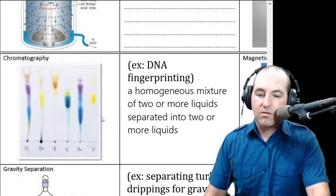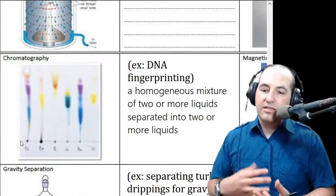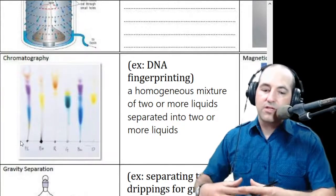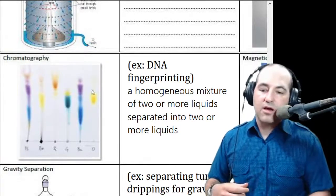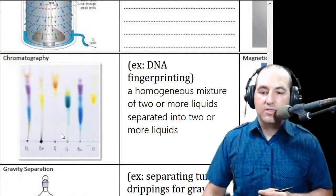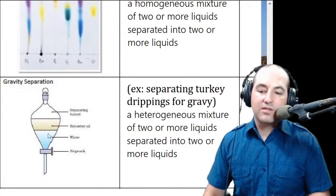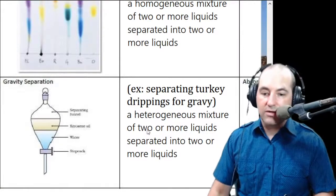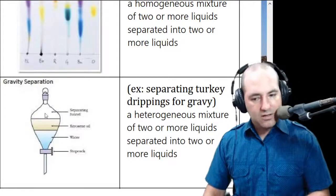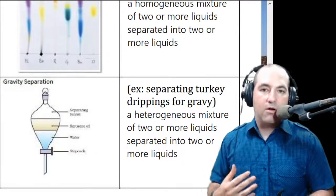Chromatography is where you have generally a homogeneous mixture deposited on some substance like paper or silica, and some substances stick to it better than others — the ones that stick better stay toward the bottom while a solvent or gas draws the other parts up. The classic example is ink getting wet and spreading out into its constituent colors. Gravity separation simply lets things sit so the more dense part goes to the bottom — this works for heterogeneous liquids. For example, water and kerosene: the hydrocarbon floats above the water, and if you have a spout on the bottom you can let one out and separate them.